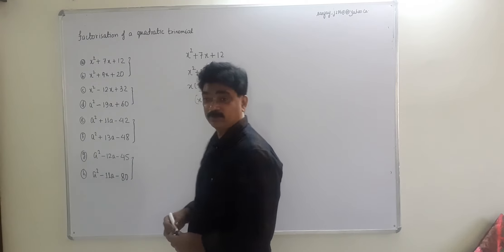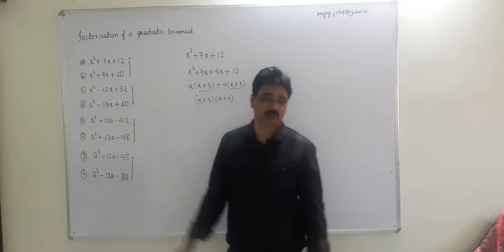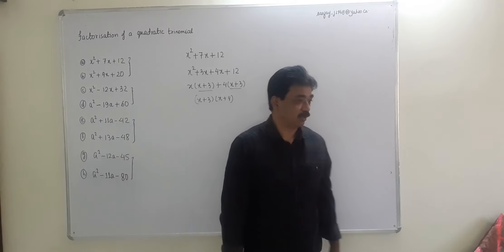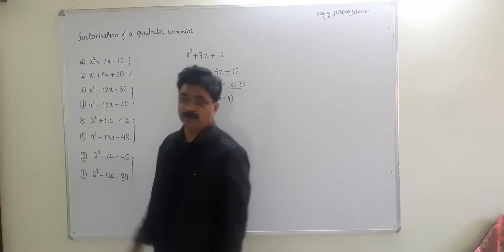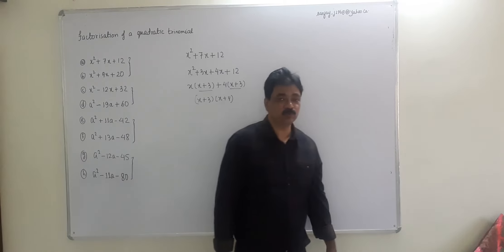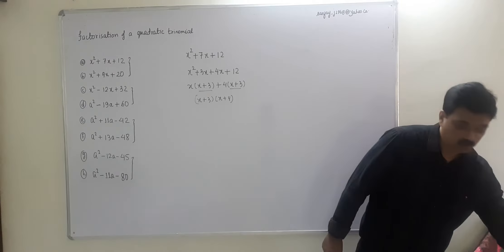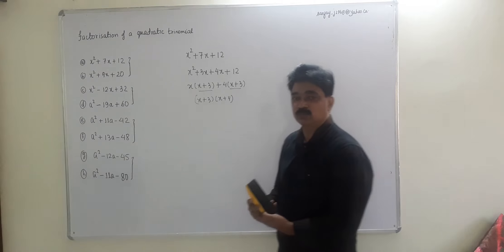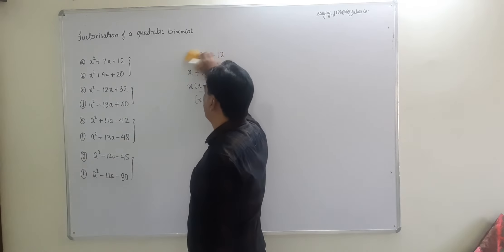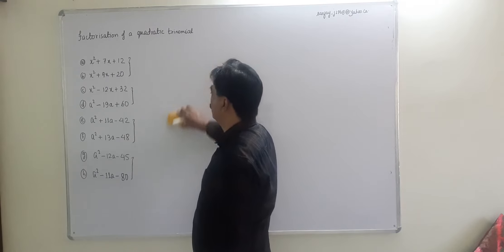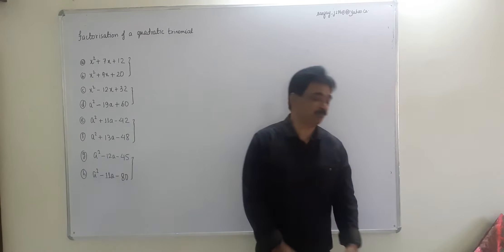Now for the next example with +20 as the constant, we need two numbers whose product is twenty and whose sum is nine. Five and four: 5 × 4 = 20 and 5 + 4 = 9. Both signs will be positive.